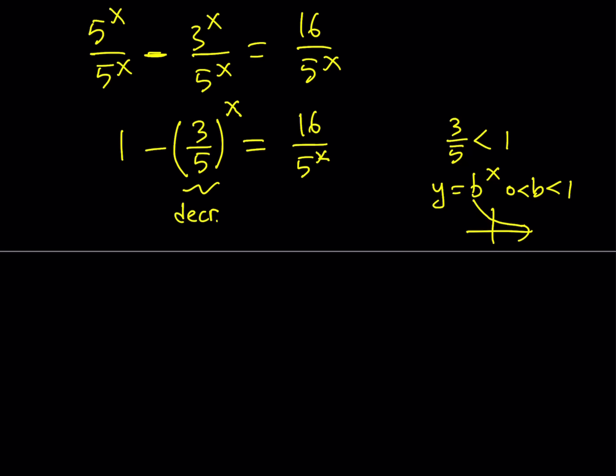And on the right-hand side, I have 16 divided by 5 to the power x. 5 to the power x is increasing because 5 is greater than 1. So the denominator is going to increase without any bounds. So 16 divided by that is going to decrease. This is also a decreasing function. So what is the big deal about it? You have two decreasing functions?